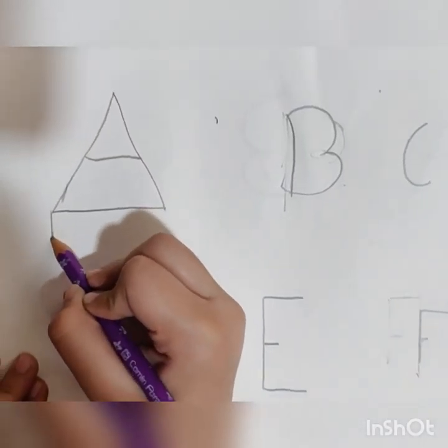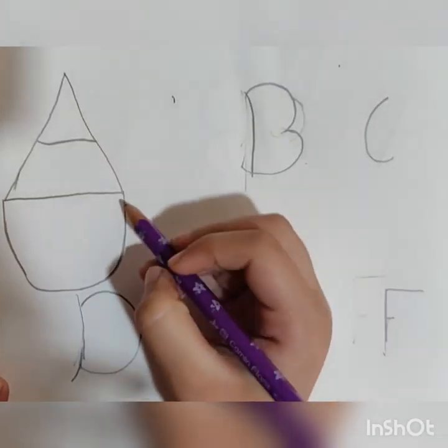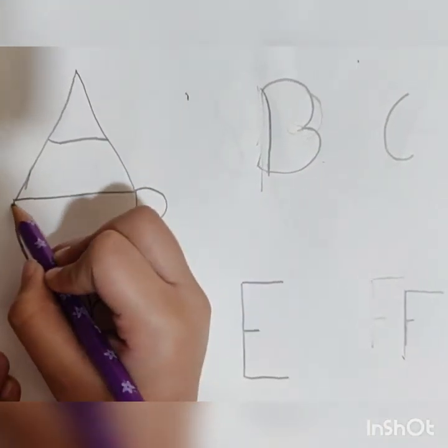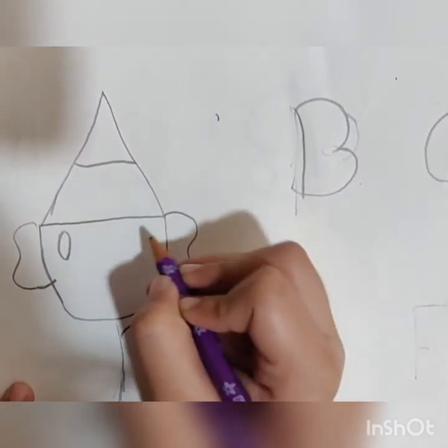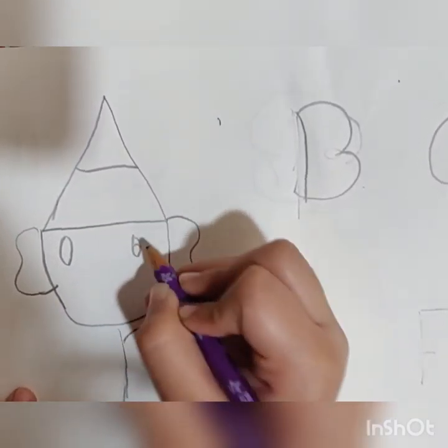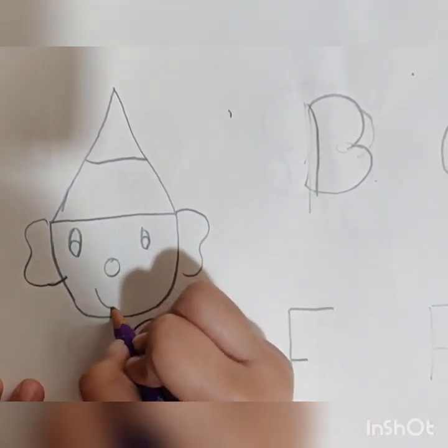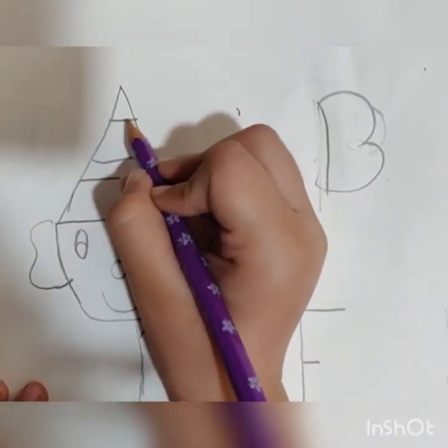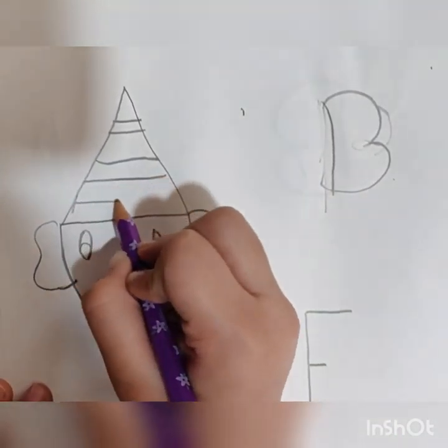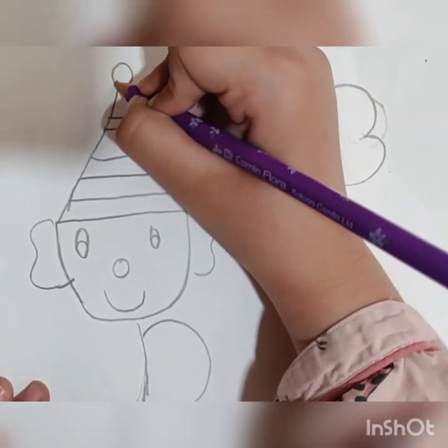From A we will draw a clown. Simple eyes, big red nose, and a mouth. I am drawing a design in the cap. If you want the cap to be plain you can do that also.